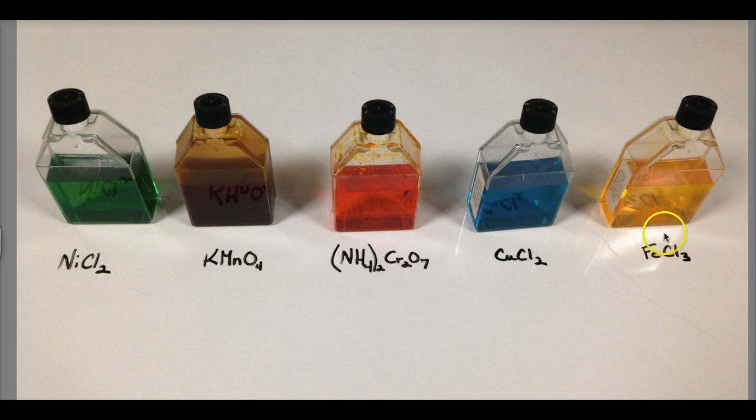These colored solutions are due to the ability to absorb certain wavelengths of light and retransmit the light they're not using. That's due to electrons in their d orbitals. You don't have to know that—just know if you're looking for color, you're looking for nickel, manganese, chromium, copper, or iron.